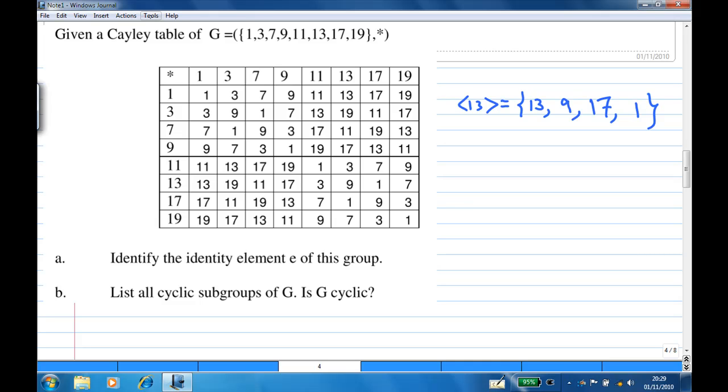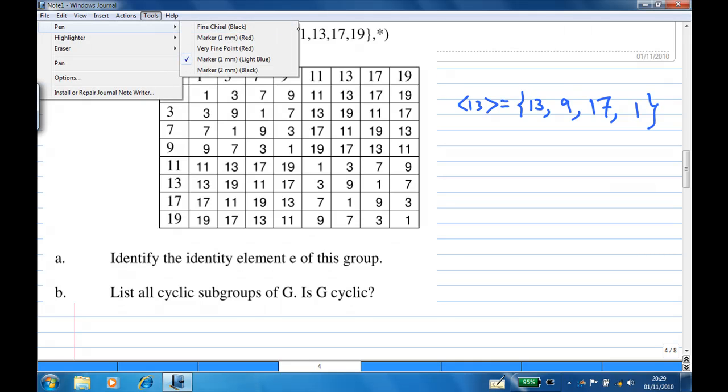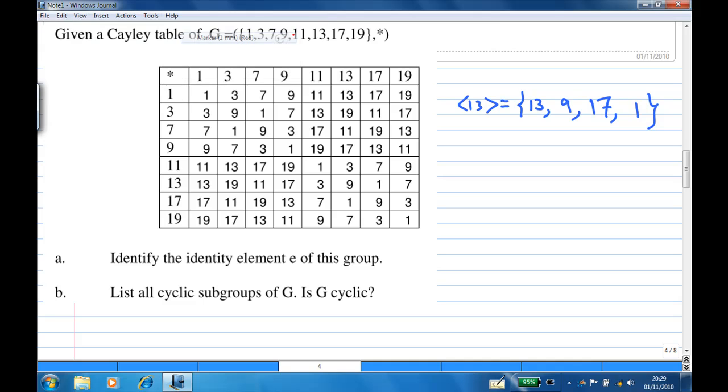So in fact, what I have shown you is this calculation that 13 power 1 is 13, 13 power 2, which is 13 star 13 is 9, and 13 power 3 is 13 star 13 star 13, happens to be 17, and 13 power 4 happens to be 1.